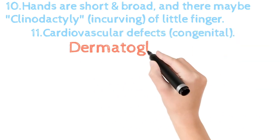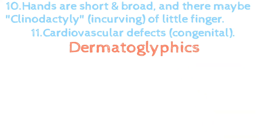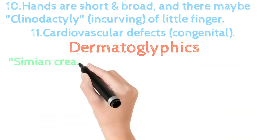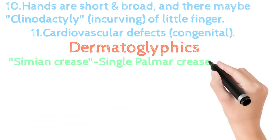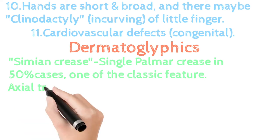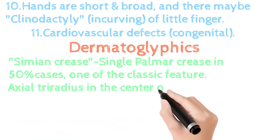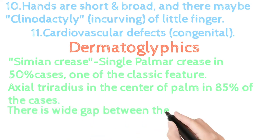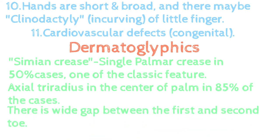Now let's talk about dermatoglyphics — the study of skin marks or patterns on fingers, hands, toes, etc. The first feature is the simian crease: a single palmar crease seen in 50% of cases, which is a classic feature. Axial tri-radius at the center of the palm is seen in 85% of cases, and there is a wide gap between the first and second toe.